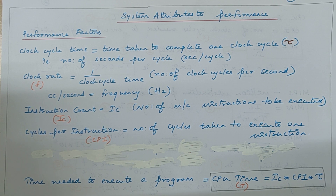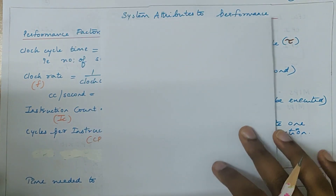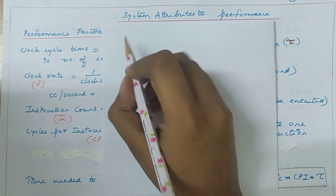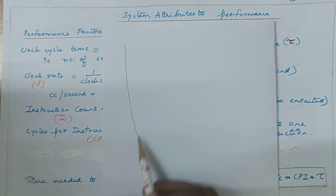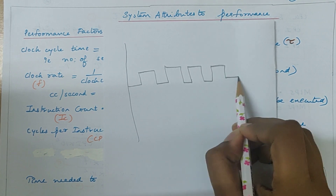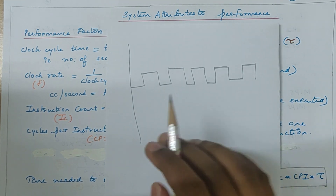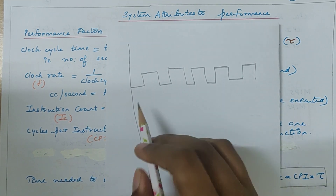Whenever we talk about a particular program being executed by the processor, we need to find out the total time in order to measure the performance of a processor. We can calculate the total time taken by the processor to execute that program. It will take some number of clock cycles in order to execute the whole program.